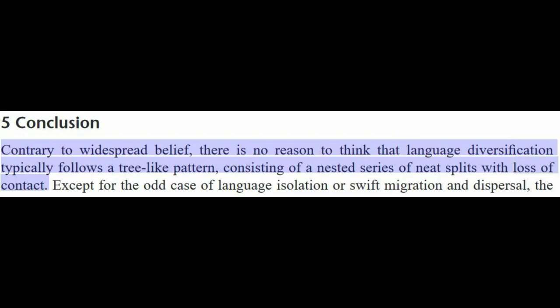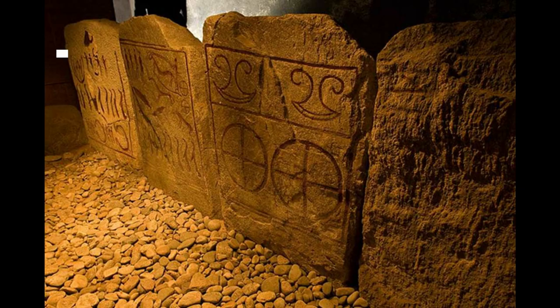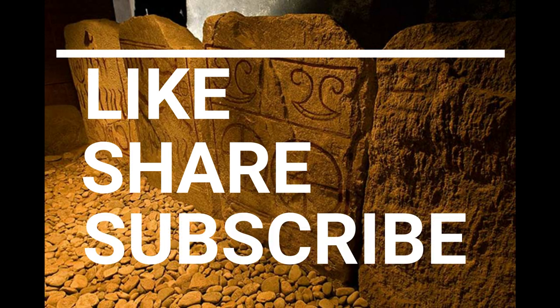So then the conclusion: contrary to widespread belief, there is no reason to think that language diversification typically follows a tree-like pattern consisting of a nested series of leaf splits with loss of contact. There is absolutely no reason to develop new languages when we already understand each other. What we see recently is people giving up their native language in favor of English, and no new languages are being developed. I will continue making videos and my theories will be based on this wave model. Like, share, subscribe and hit the bell icon. Thank you.